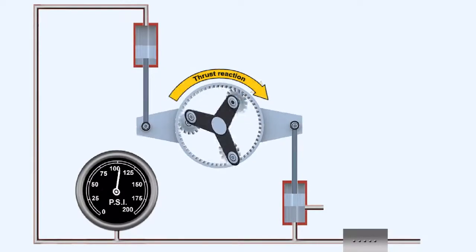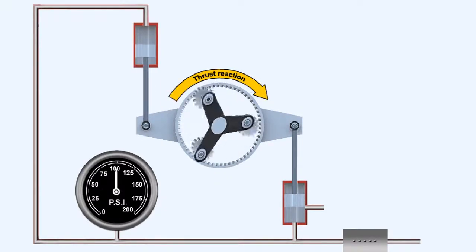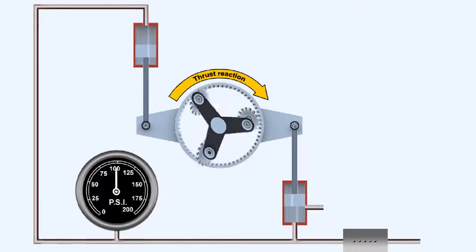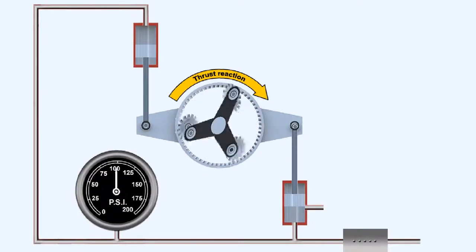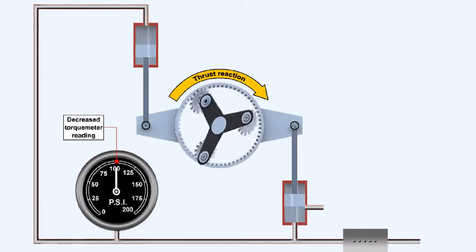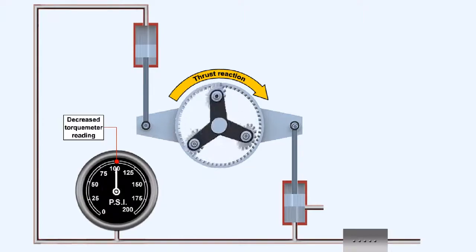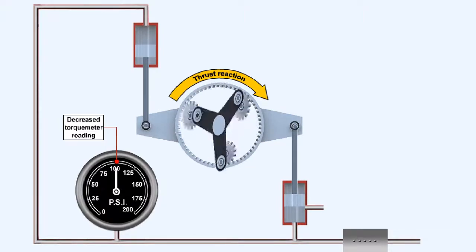This will cause the oil pressure to decrease, until the piston moves back into the sensitive position, where torque meter oil pressure once again balances engine torque. The decrease in oil pressure required to achieve this balance is indicated on the torque meter gauge as a fall in engine output torque.